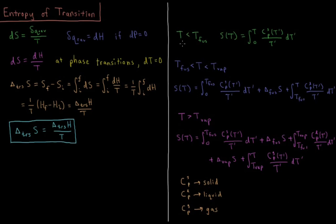For temperatures below the melting point of the system, T_fus (temperature of fusion), S(T) equals the integral from 0 to T of the constant pressure heat capacity of the solid, Cp,s, divided by T, integrated over T.